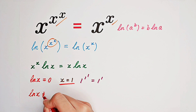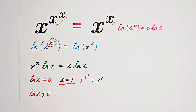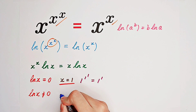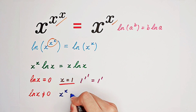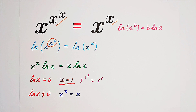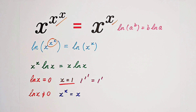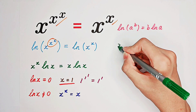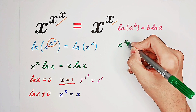Then, if natural log of x is not equal to zero, we can divide both sides by it. We get x to the power of x equals x. Now we've simplified the equation to this form, and we just solve x to the power of x equals x.